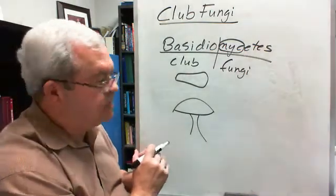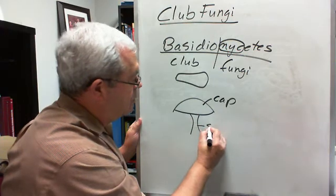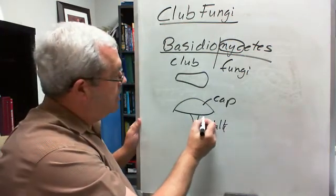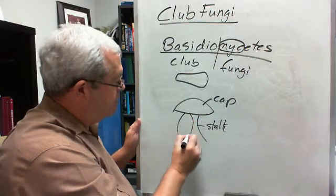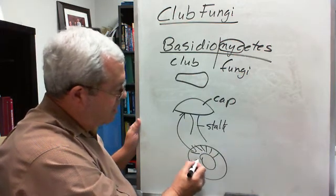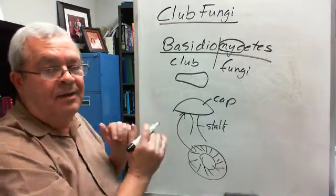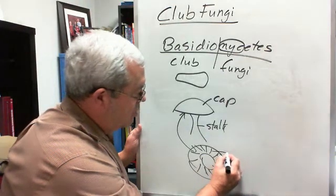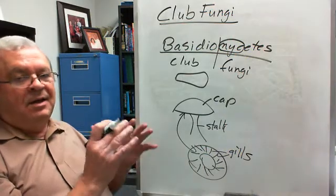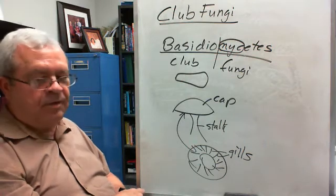Let's label the parts. The top is called the cap, and we'll call this the stalk. Underneath the cap, if you kind of open it up, there are all these little vertical partitions or walls — little vertical elements. Those are called gills. Not all mushrooms have gills; some have pores. But we're just going to talk about mushrooms that have gills.